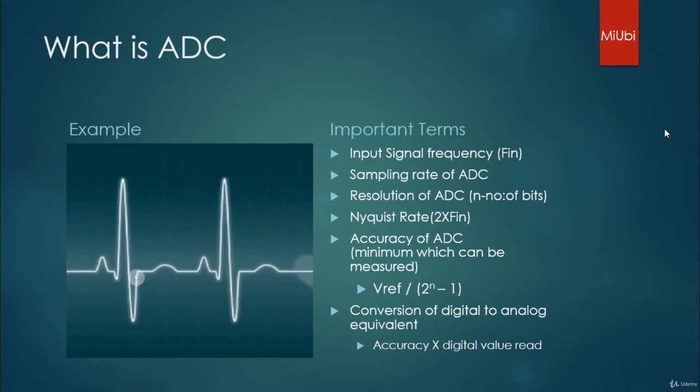For which we have to follow the Nyquist rate. Nyquist rate says that the sampling rate should be two times your input signal frequency, so you will be able to reconstruct the analog signal back.